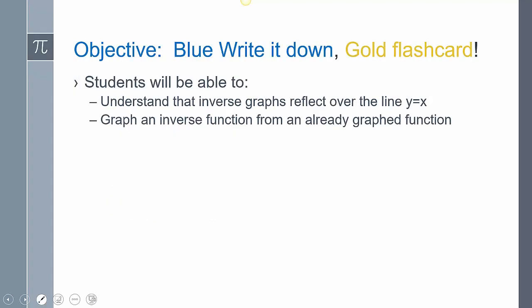The things we should be able to do at the end of this lesson is understand that inverse graphs reflect over this line, y equals x. If it forms that reflection and creates symmetry, that means if you fold it over that line, they should overlap. And then we're going to graph an inverse function from an already graphed function.